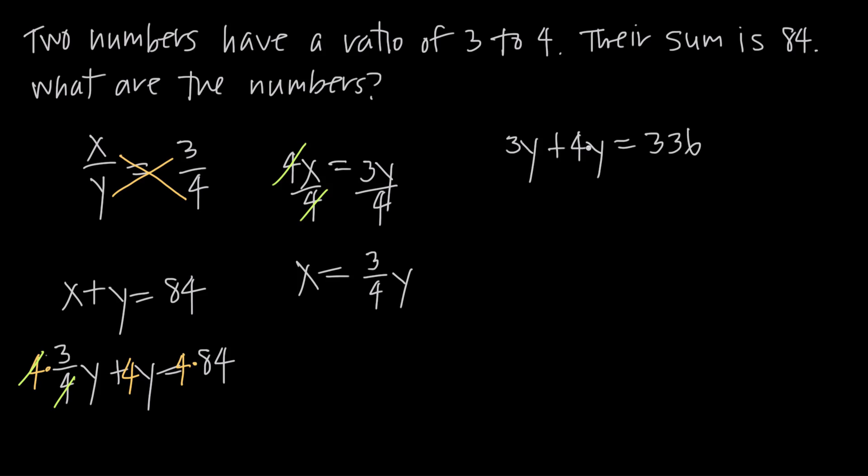Then I have 3y plus 4y. Those are like terms that I can combine. I'll get 7y equals 336. To solve for y, I'm going to need to divide both sides by 7. I'll get my 7s to cancel on the left, leaving me with just y is equal to, and when I do 336 over 7, I'm going to get 48.